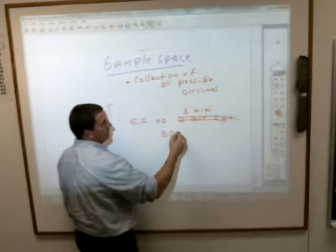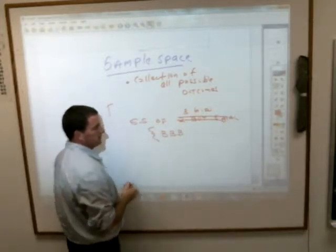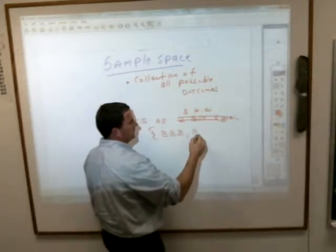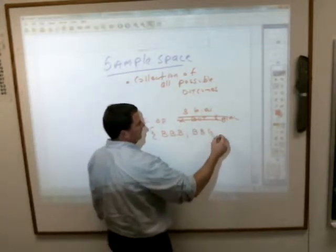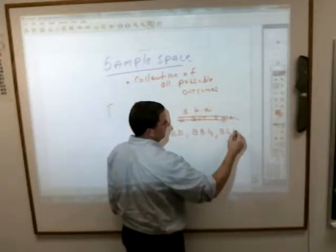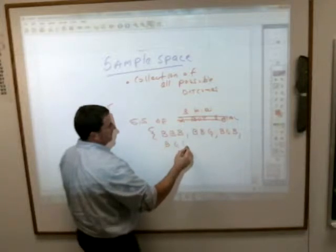You could have a boy, a boy, and a boy. And usually we put it in parentheses because that means it's a set of things. You could have a boy, a boy, and a girl. You could have a boy, a girl, and a boy. You could have a boy, a girl, and a girl.